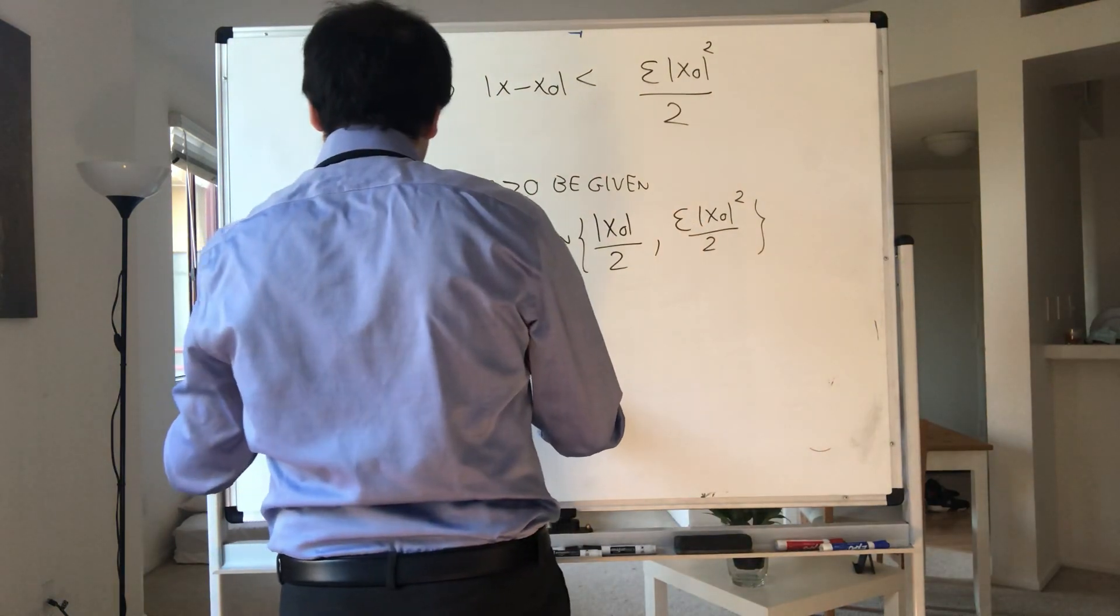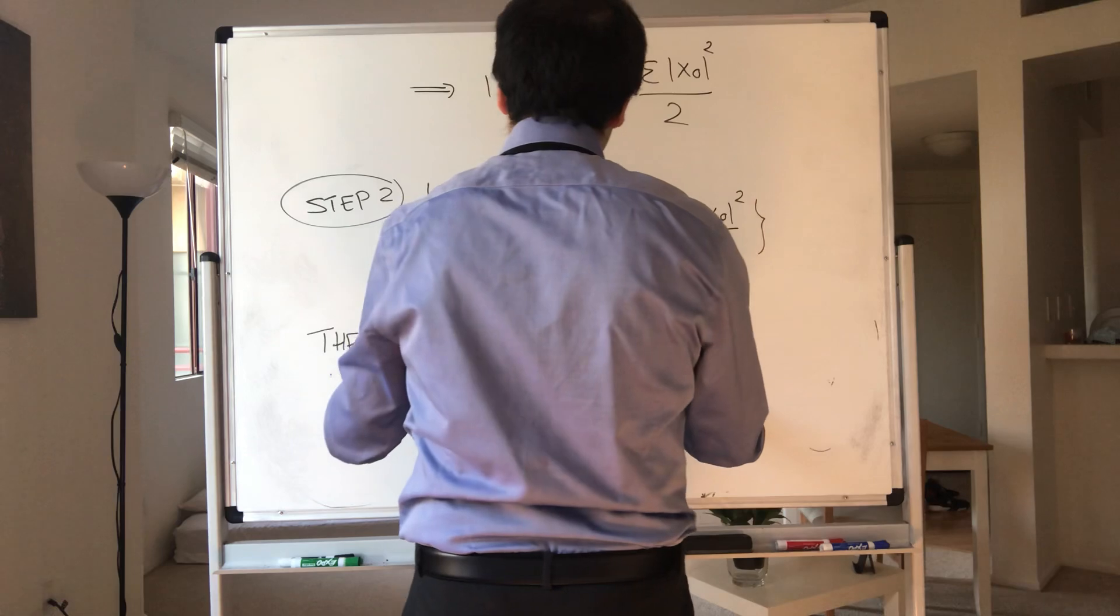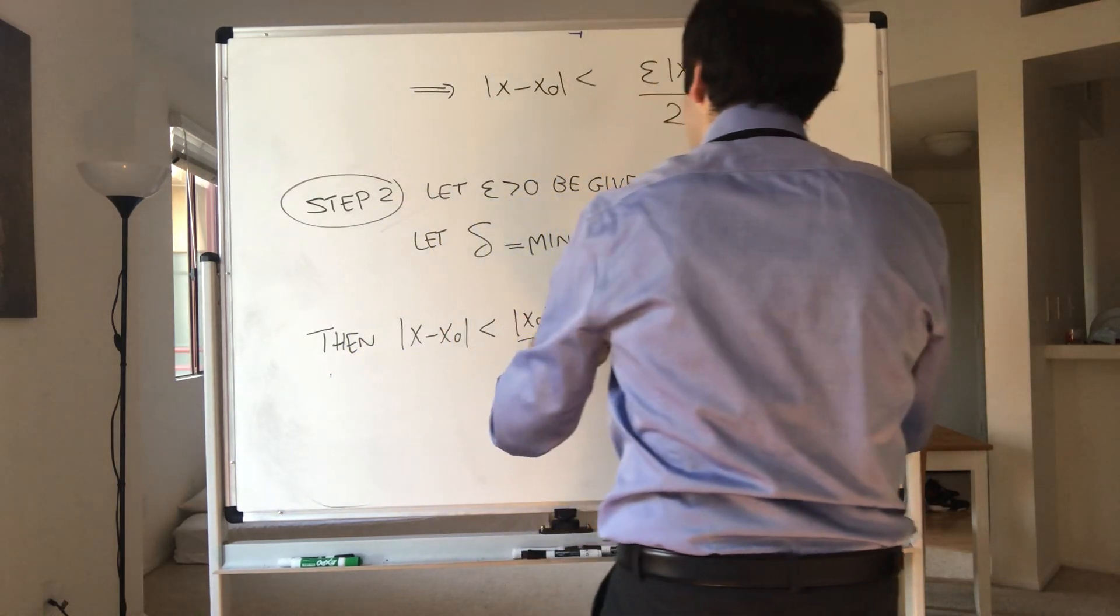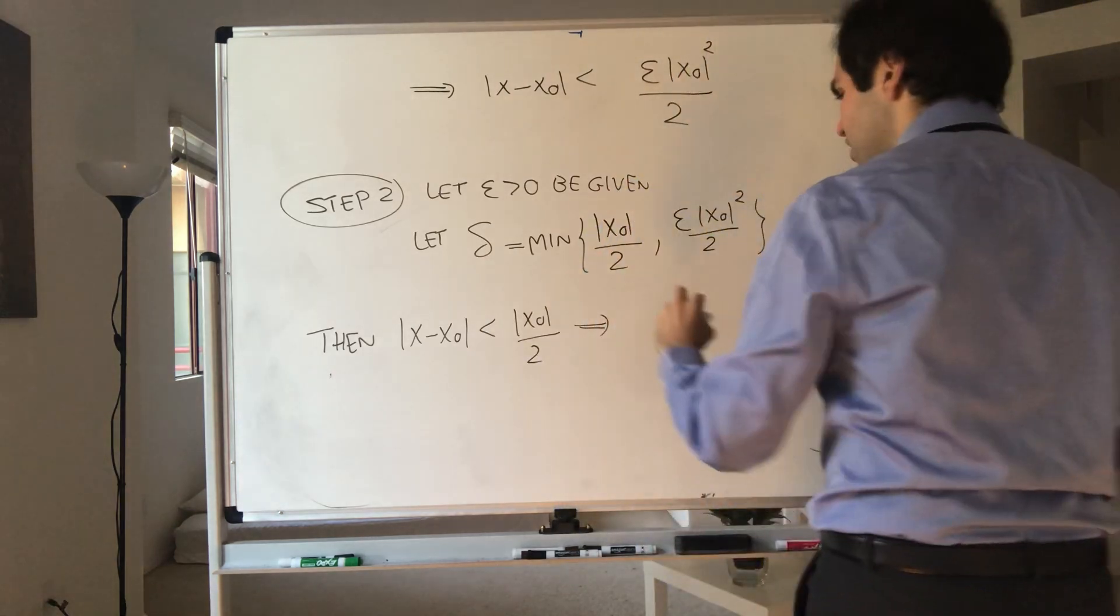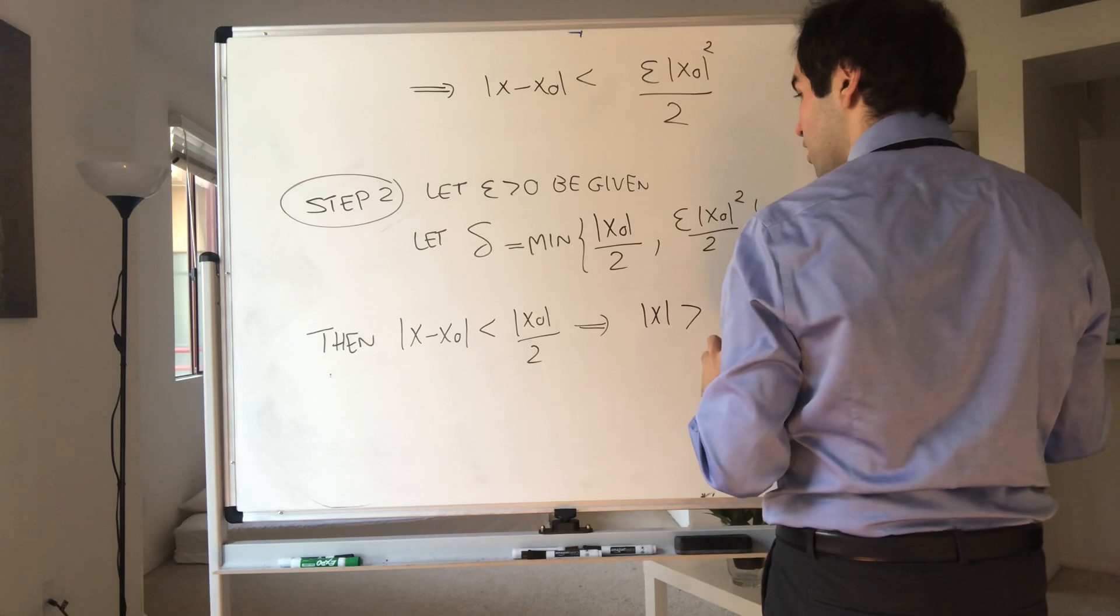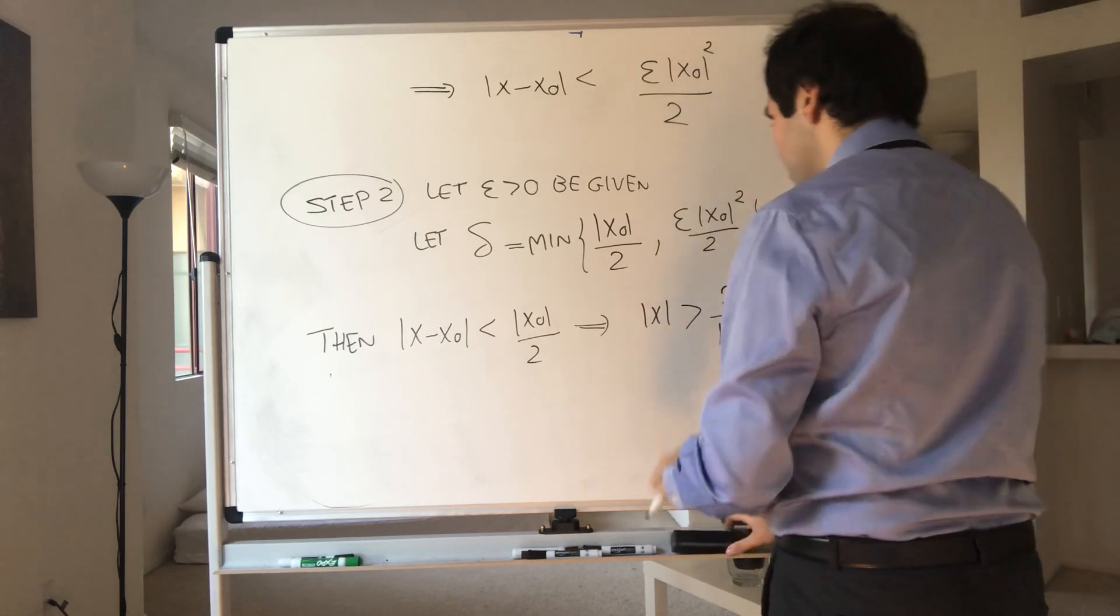So let delta be the minimum of that. Then, well, on the one hand, we know x minus x naught is less than x naught over 2, which gives us the good inequality that we wanted. So x was bigger than x naught over 2.